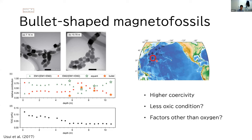So the presence of this kind of magnetic fossils may suggest that factors other than oxygen might control the morphology of magnetofossils.